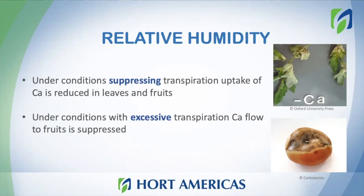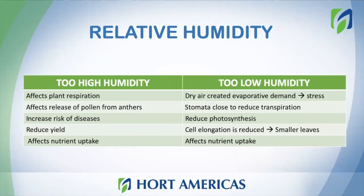Calcium is a nutrient that moves within the water, so if you have a condition of relative humidity that is not optimal for your plant, you can also affect nutrient uptake. Very high or very low humidity levels are stressful for the plant. Too high humidity levels can reduce yield, affect nutrient uptake, affect pollination, and affect plant respiration. If you have too low humidity levels, the stomata will close to reduce transpiration in order to save water, resulting in a reduction in photosynthesis and smaller leaves.